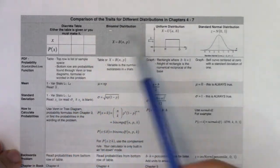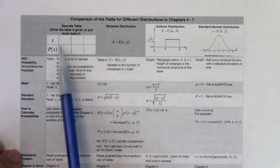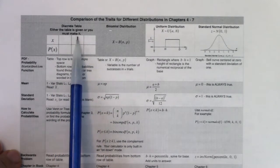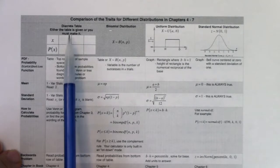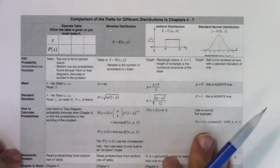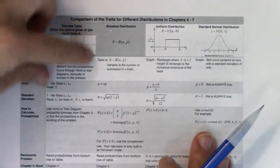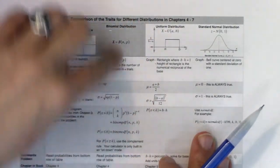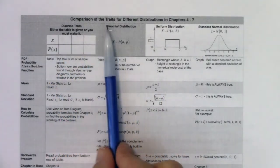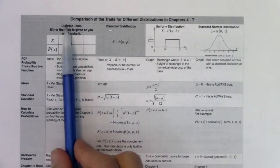You can see these first two columns here: we've got a discrete table or the binomial distribution. Those are the two types of problems. On the table side, either the table is given to you or you must make it. Or maybe it's the special case where it's binomial. When you discover you're in a table problem or a binomial, you just stay in the column — stay in your lane.